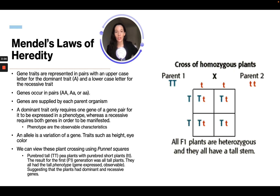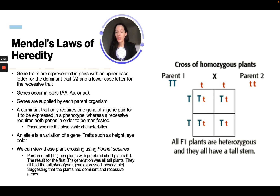A dominant trait only requires one gene of a gene pair to be expressed in a phenotype, whereas a recessive requires both genes in order to be manifested. So the recessive gene here is the short stem — we'll only get a short-stemmed plant if we have two recessive traits together, which we don't for any of the children, but this parent does, which is why it's short. Phenotype is the observable characteristics we see, and an allele is a variation of a gene, such as height or eye color.